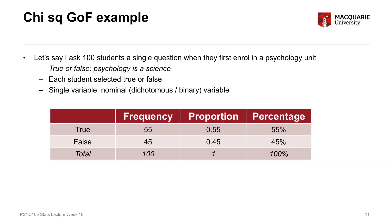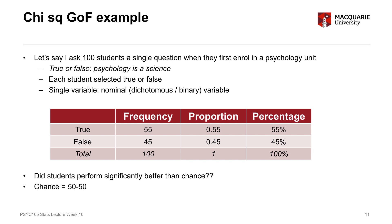I can represent my data in this table — in this hypothetical example, 55 students said true and 45 students said false. So out of those 100 students, 55% said true and 45% said false. What I'm interested in here is whether students performed significantly better than chance, where chance would be about a 50/50 split.